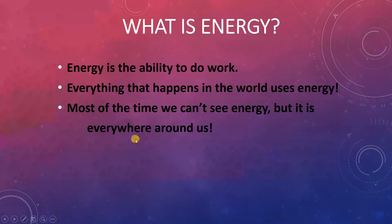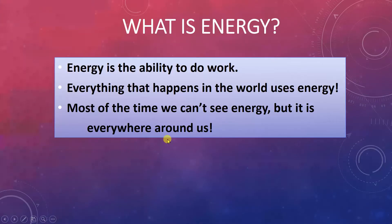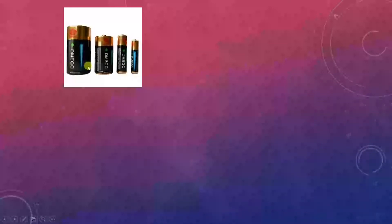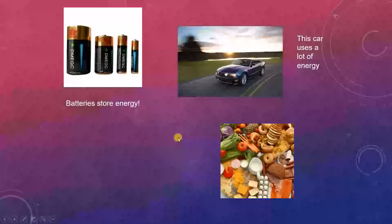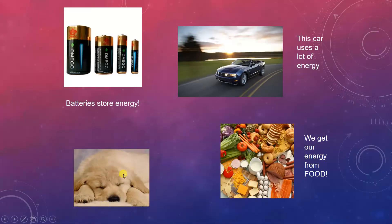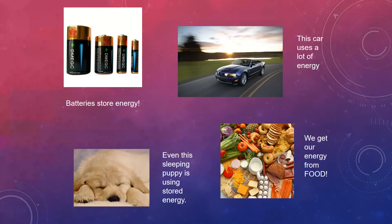Let's look at some examples. Cells store chemical energy. A fast-moving car stores kinetic energy due to its motion. We get energy from the food we eat. Even a sleeping dog has stored energy inside it — we are not able to see it, but the energy is there.